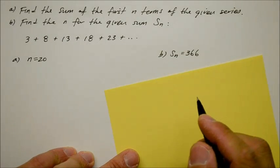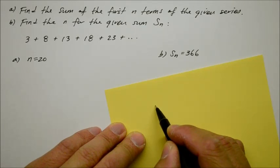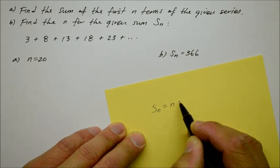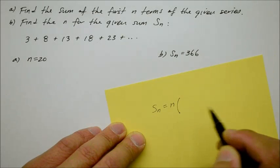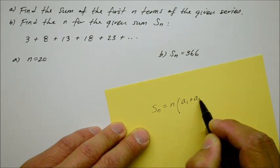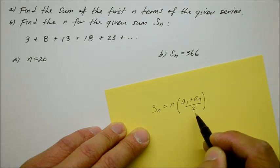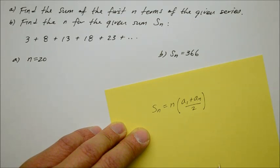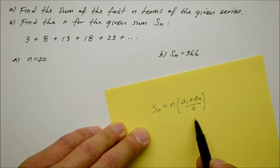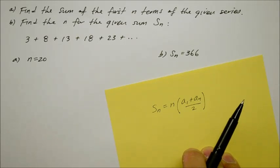The arithmetic series — the sum of them all — is given in general form as S of n is equal to n times the quantity of a sub 1 plus a sub n, divided by 2. And we're going to use this general form to find the entire sum of the series.